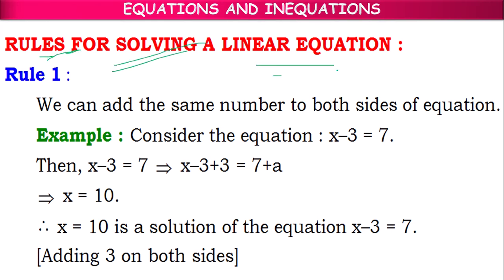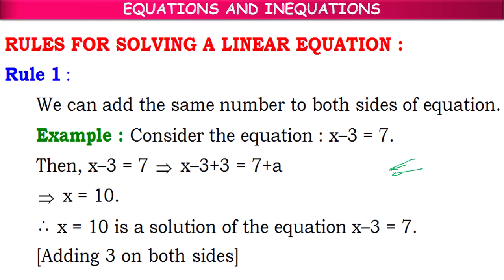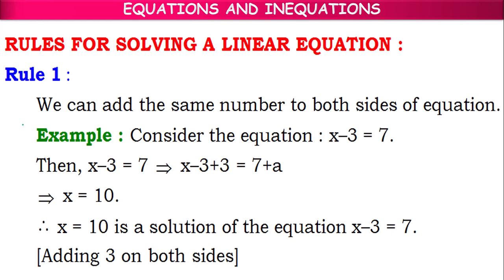We have some rules for solving a linear equation. According to rule 1, for any equation we will be having an equality sign, with LHS before it and RHS after it. We can add the same number on both sides of the equation — LHS plus same number equal to RHS plus same number. That is rule 1.